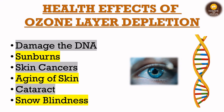Now we'll talk about the health effects of ozone layer depletion — why we are concerned when ozone depletes. First, it can damage DNA — harmful UV radiations reaching our skin can penetrate beneath it, damage DNA, and cause mutations. Second, it can cause sunburns, skin cancers, aging of skin, cataracts, and snow blindness. Snow blindness occurs when the cornea absorbs high doses of UV radiations, causing inflammation of the cornea.